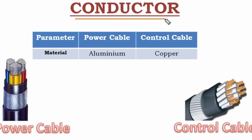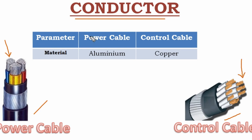The conductor is very important in both the power cable and control cable. In the power cable, the conductor material used is aluminum, while in the control cable, the conductor material used is copper. The conductor in both cable types carries the current and voltage.